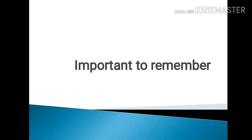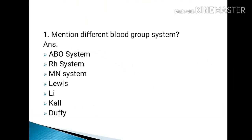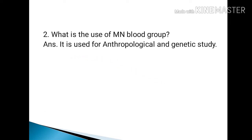Important points to remember. The different blood group systems include the ABO system, RH system, MN system, Lewis, Kell, Duffy, etc. The MN blood group is used for anthropological and genetic study.